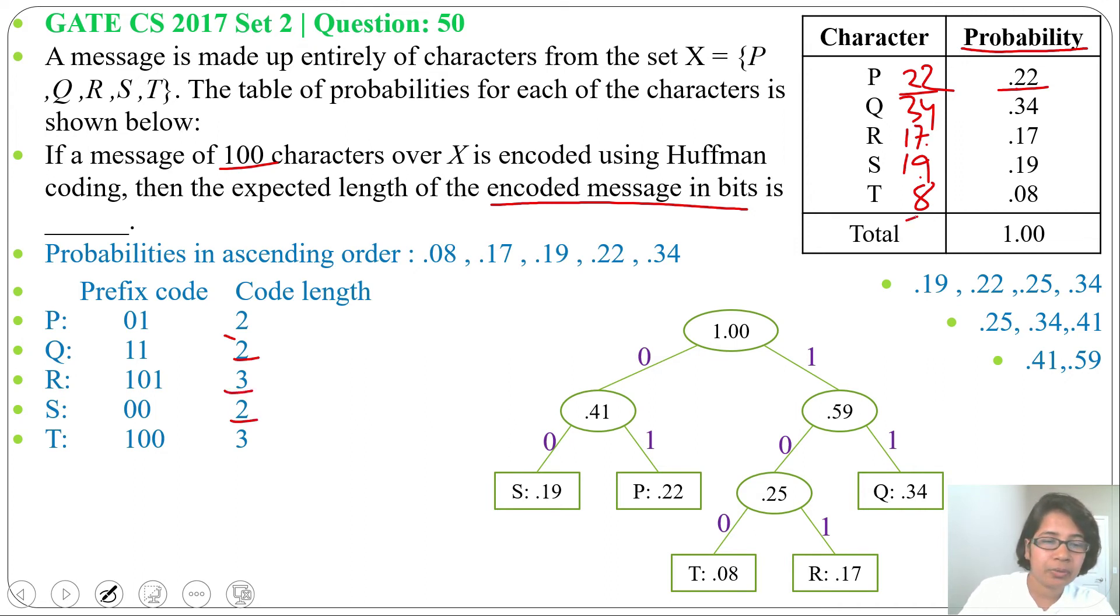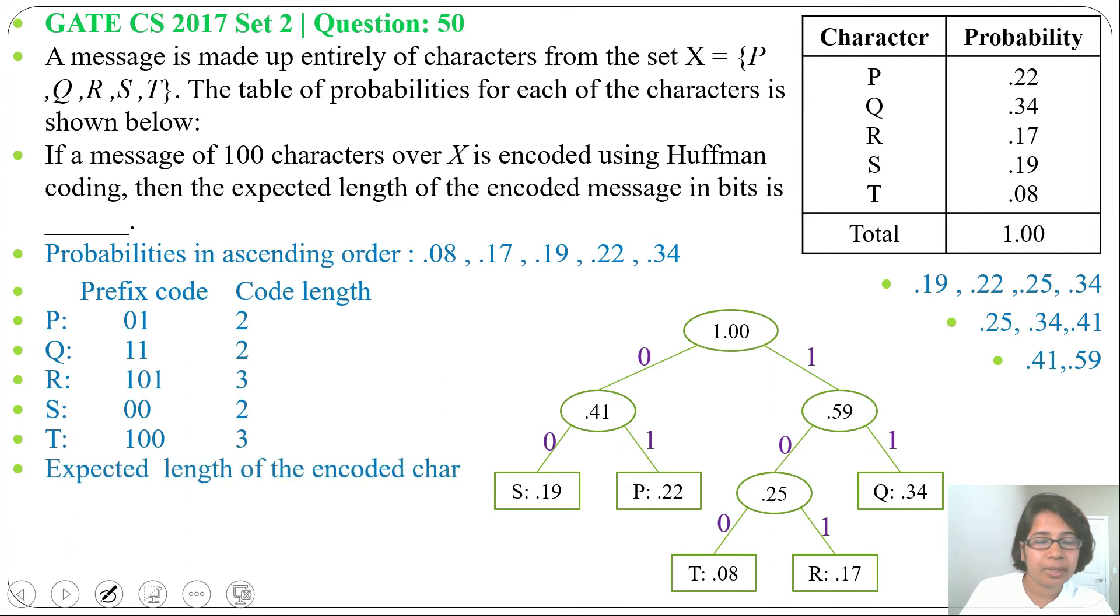Let me multiply probabilities with code length. That will be the expected length of the encoded character.